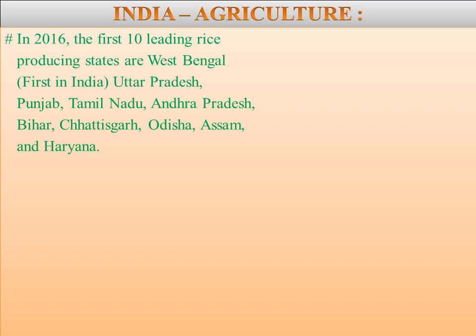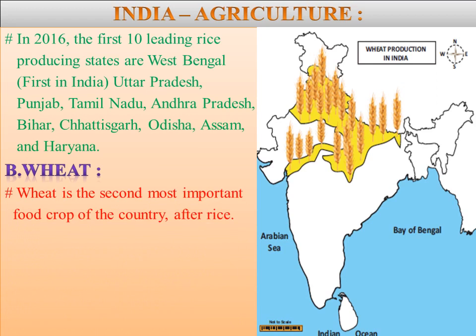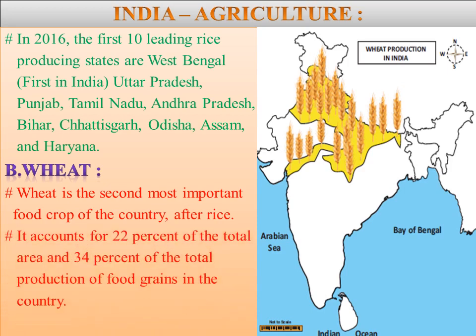Next we are going to learn about wheat. Wheat is the second most important food crop of the country after rice. It accounts for 22 percent of the total area and 34 percent of the total production of food grains in the country.